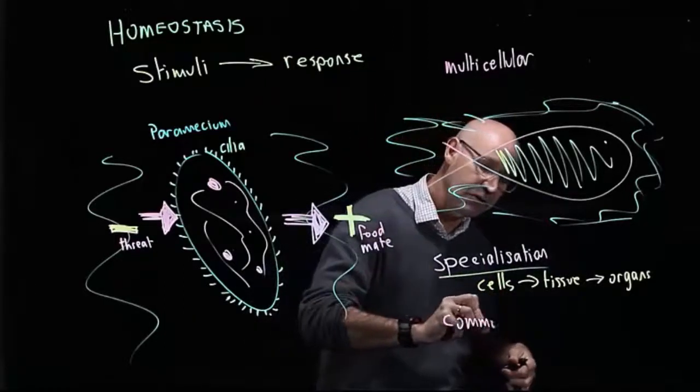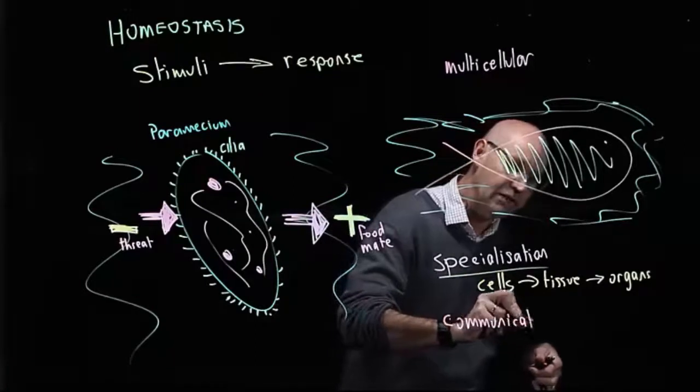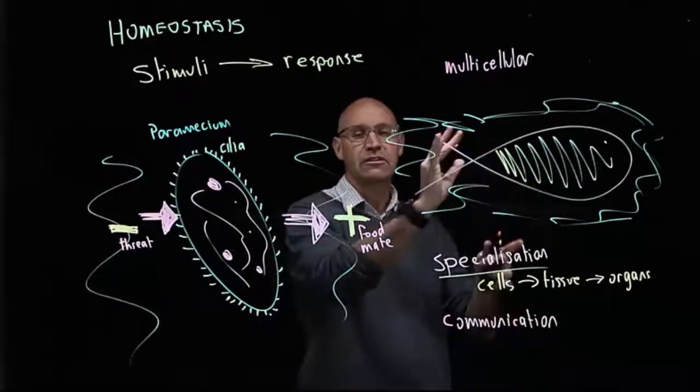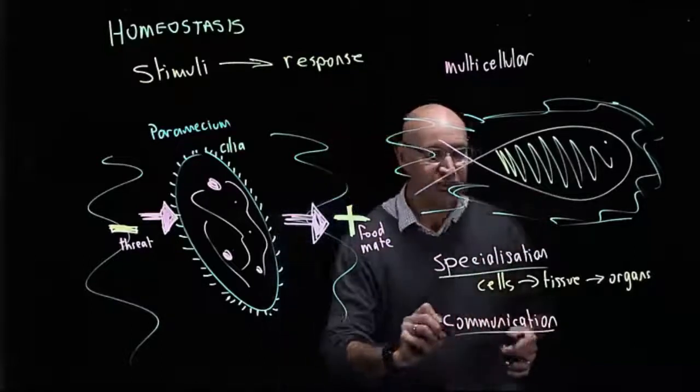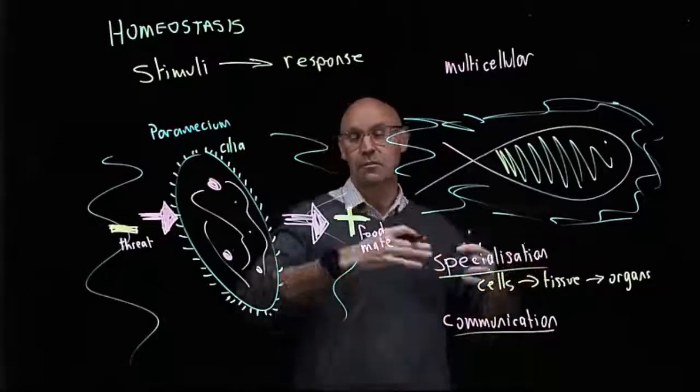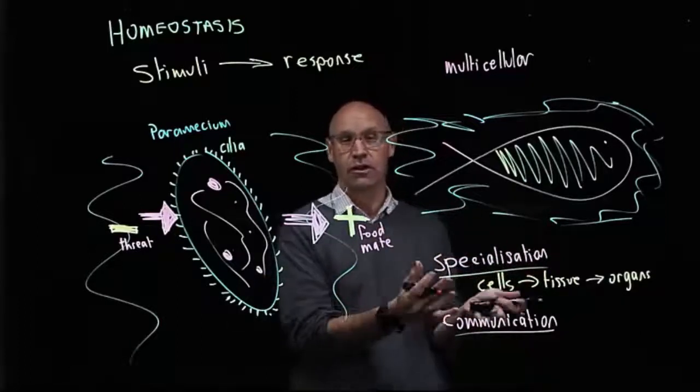There are mechanisms within a multicellular organism for it to be able to communicate between the different cells. So the different cells, tissues, and organs all work together to maintain a constant internal environment.